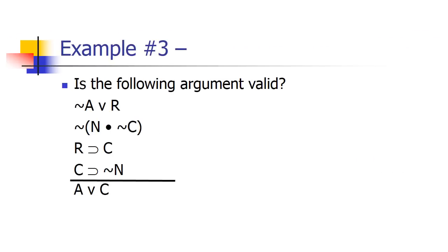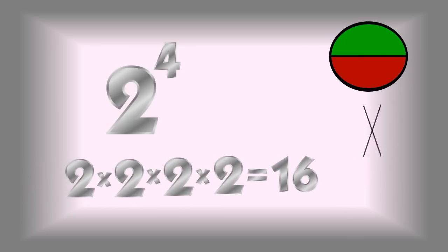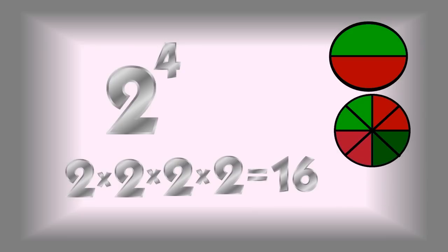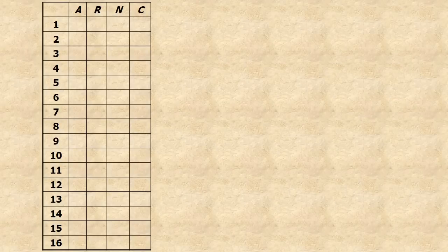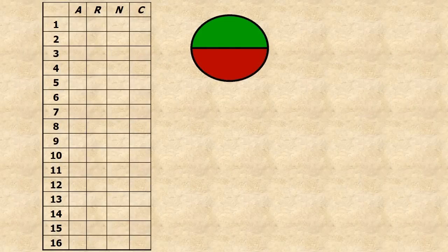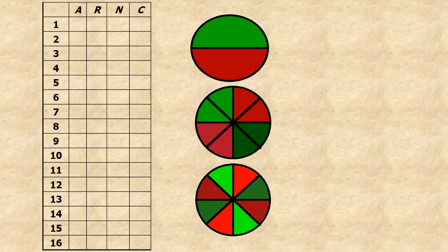Now let's take on a real monster just for practice's sake — four premises and a conclusion. This is going to be very difficult, but remember, truth tables are easy as long as you follow the steps. We've got four propositional variables, meaning we need a truth table that is 16 rows long — that's the longest we've tried. We set up all possible combinations of trues and falses by cutting into halves: half-on, half-off; then quarters; then eighths; then sixteenths.